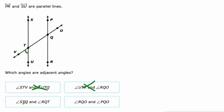STQ and RQT — they don't share a similar vertex. STQ and RQT are alternate interior angles, so that's not going to work for us. These do share a vertex and they share a side: QO and QO. So RQO, which is this one, and PQO, which is this one — see, they share this side and they share a vertex. They're not congruent; they actually add up to 180 degrees in this situation, so they're supplementary.